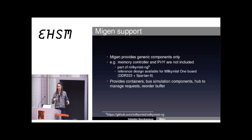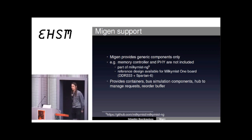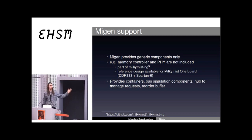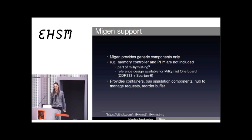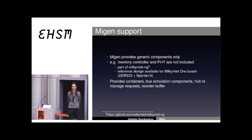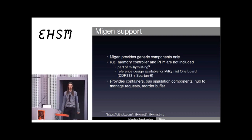Memory controller and PHY are not included in Migen itself, but there is a reference design which works on the Milky Mist boards. It actually works — you can boot Linux on that system running ASMI and have a frame buffer. I wouldn't say it's 100% tested, but it's 99.9% correct at least. If you were scared about the out-of-order aspect of ASMI, Migen provides all the reorder buffers you need. You just connect to your bus and you can have an interface which looks like an in-order bus to your other cores.